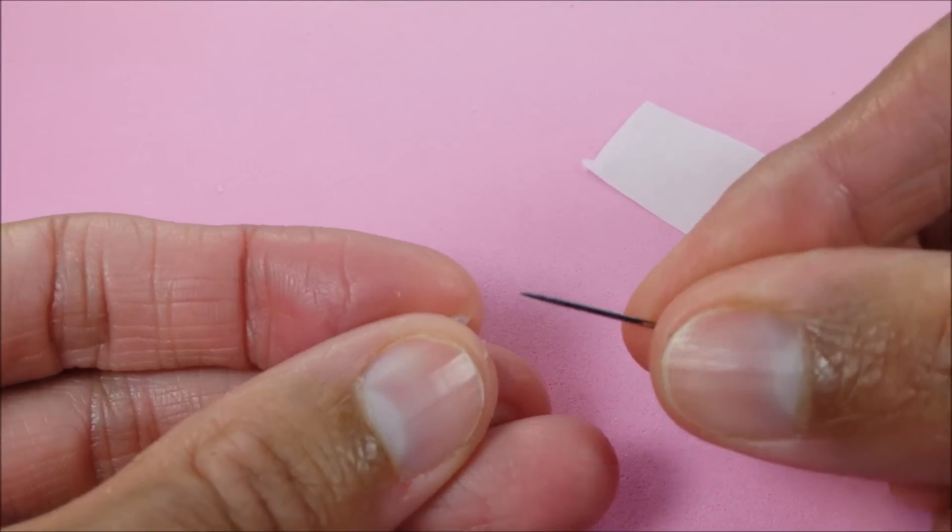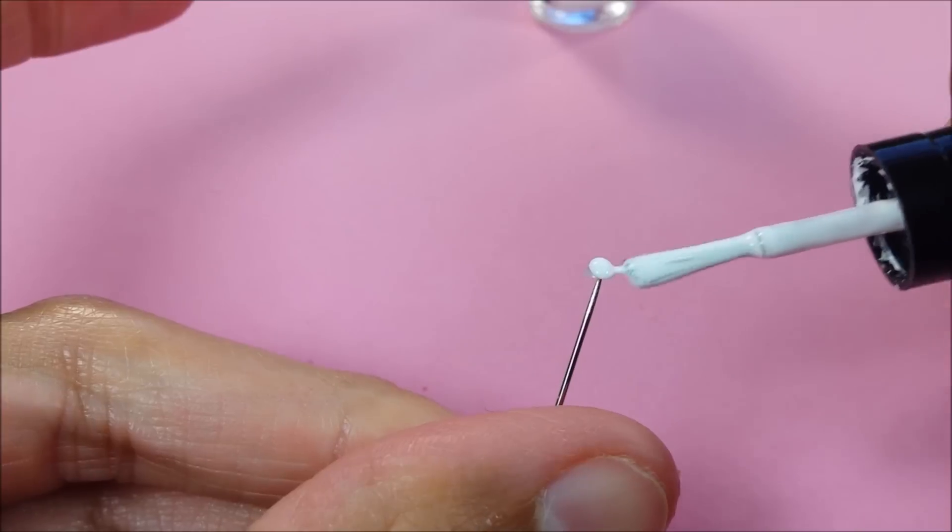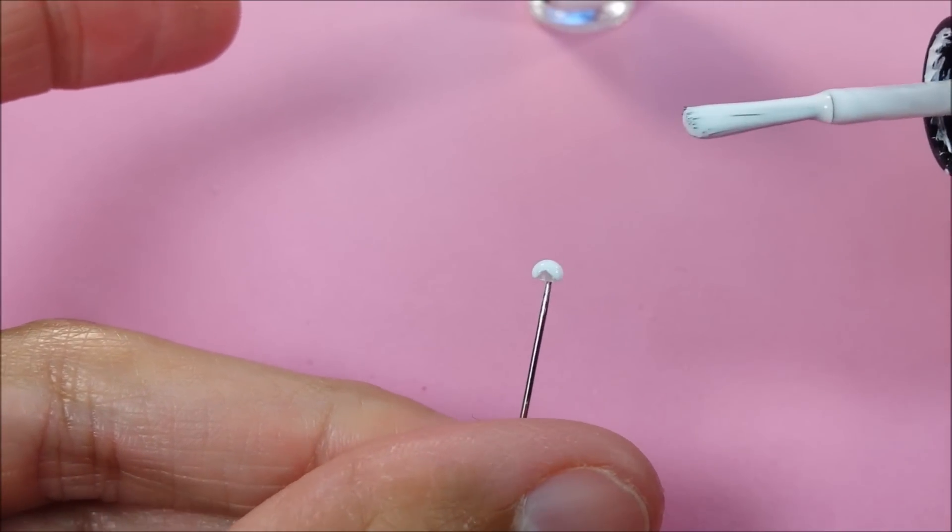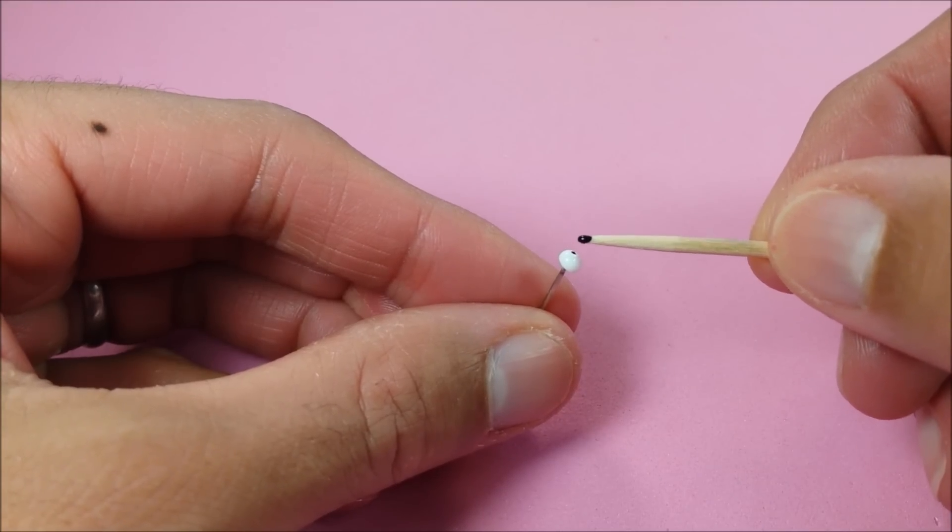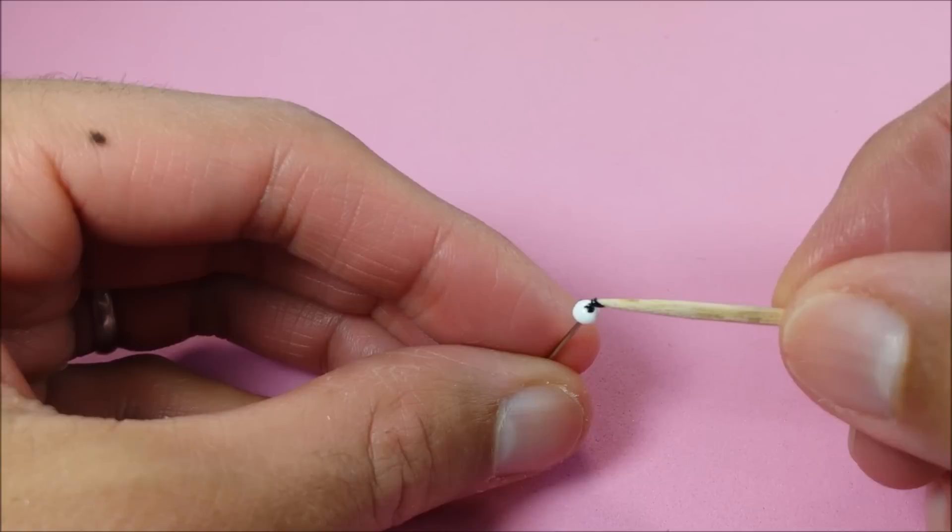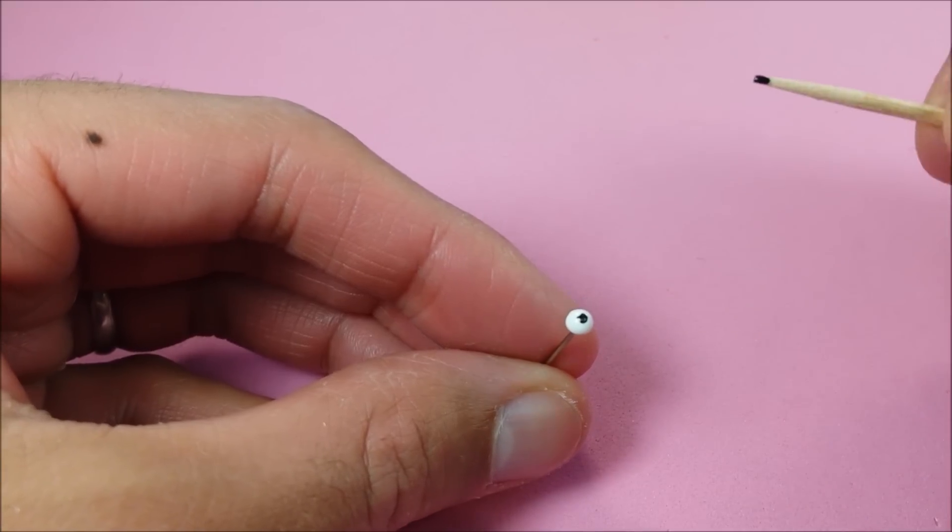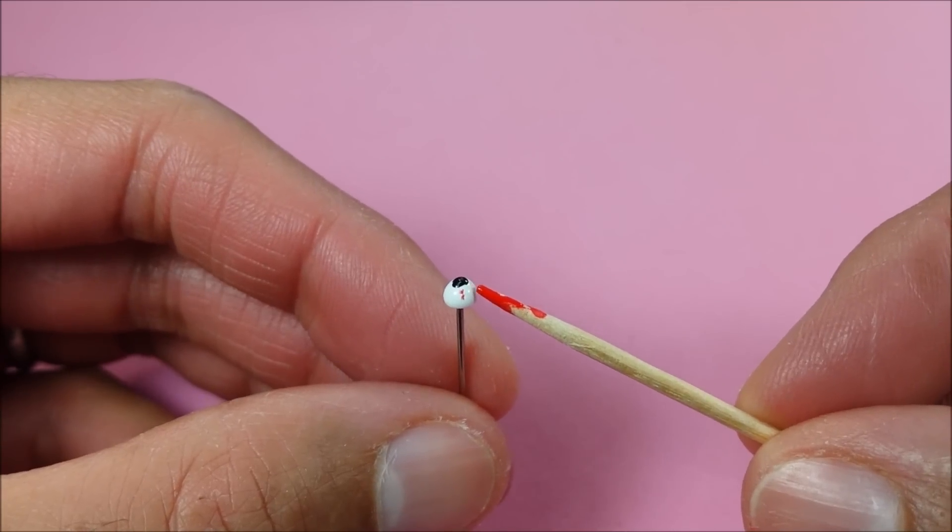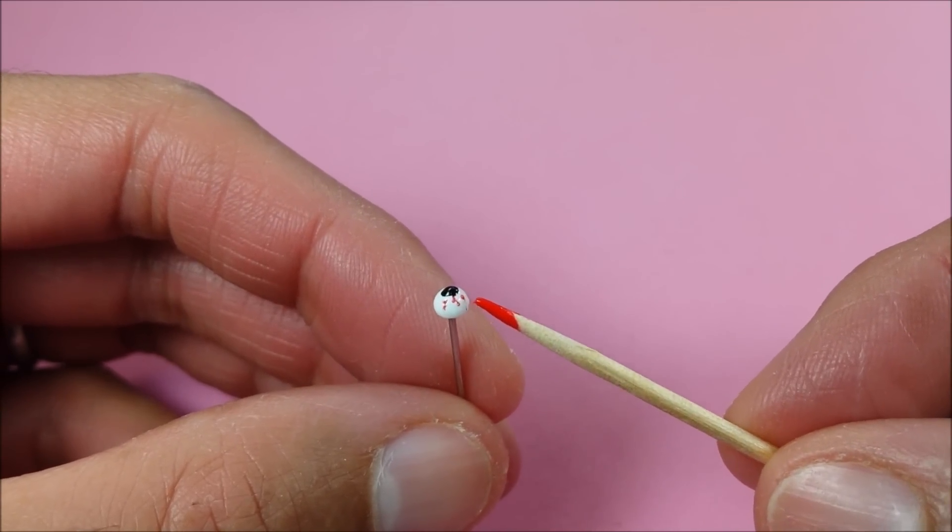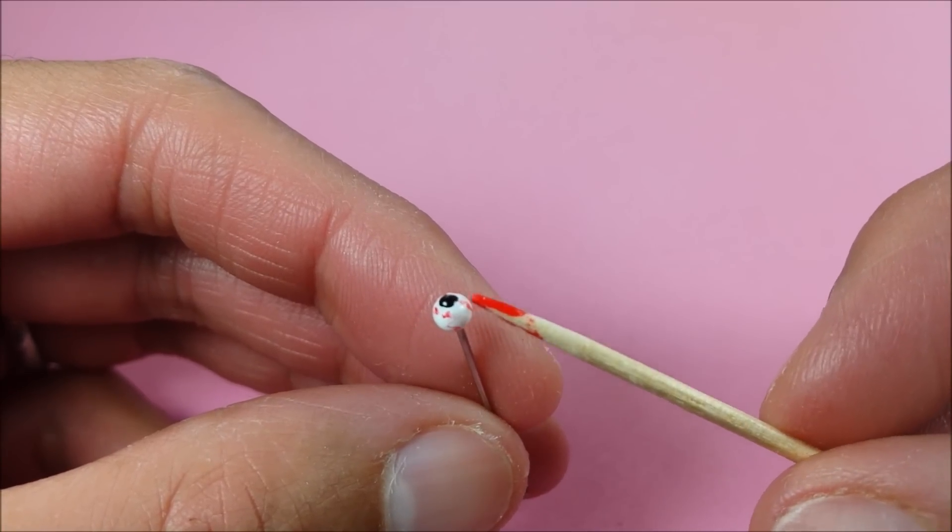I stab it with a needle and paint it white. When it dries, I add some black, and when that dries, I just drag a tiny bit of red nail polish to give that kind of bloodshot effect.